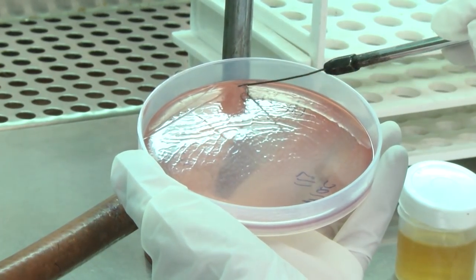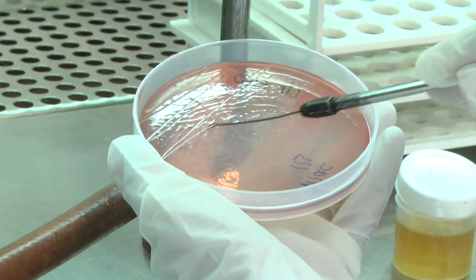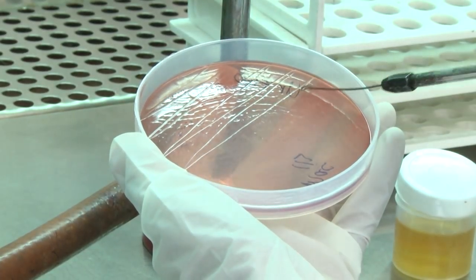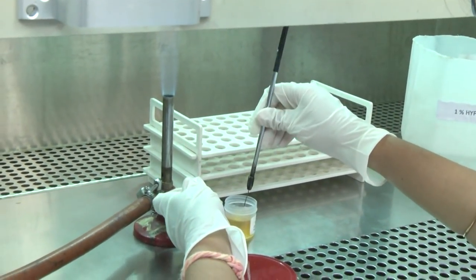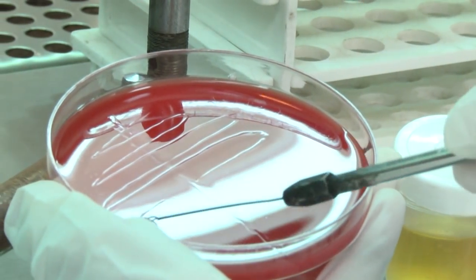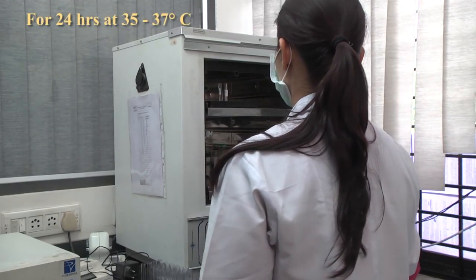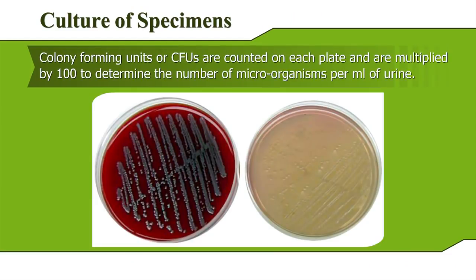Then, starting from one end of the line, spread the inoculum in a zig-zag fashion across the middle line, covering an adequate portion of the surface of the agar. Without reflaming, insert the loop vertically into the urine container again and repeat the procedure for the other plate. Incubate plates for 24 hours at 35 to 37 degrees centigrade. Colony forming units (CFUs) are counted on each plate and multiplied by 100 to determine the number of microorganisms per milliliter of urine.